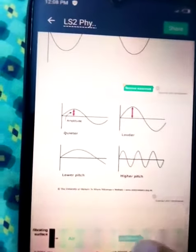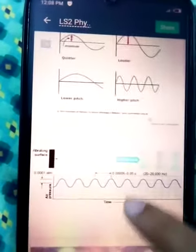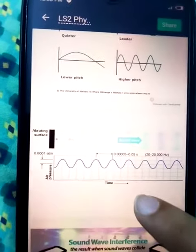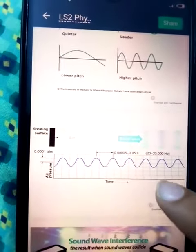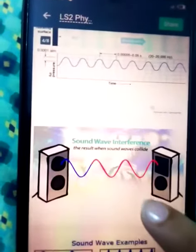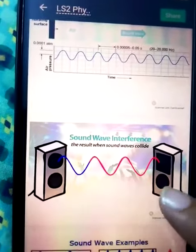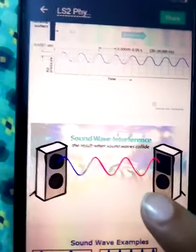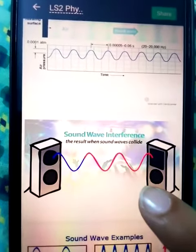We discussed about sound waves, that how sound waves travel through a medium, how they propagate through a medium. Sound waves interference—that how the waves interfere. We have shown different examples of wind waves and light waves as well.